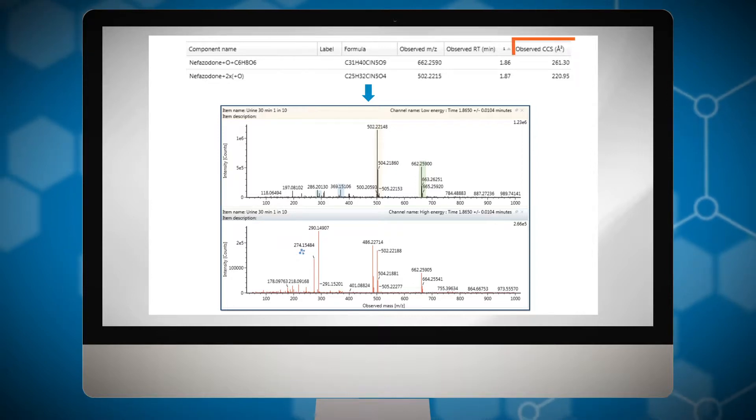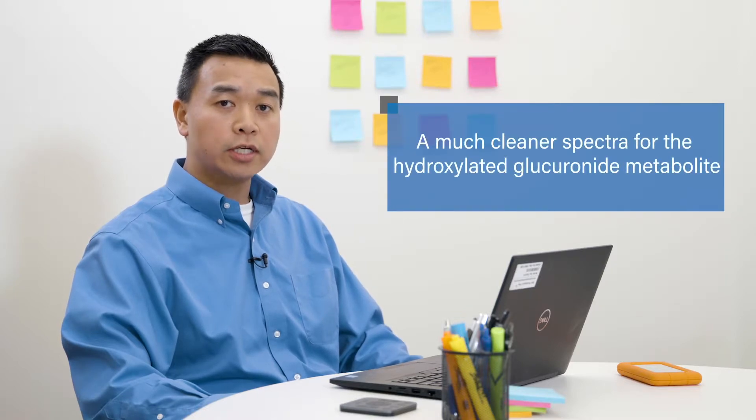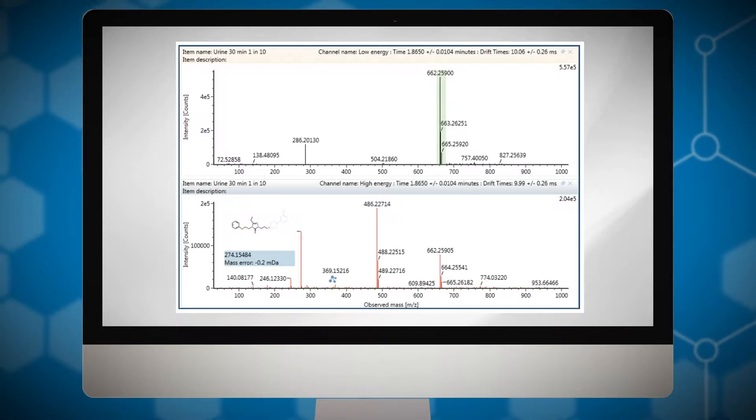This is where ion mobility separation and CCS values help. When we filter the data based on their drift time in the ion mobility cell, we now get a much cleaner spectra of the hydroxylated glucuronide metabolite. With this information, we can now assign the mass spectrometry data to the structure.